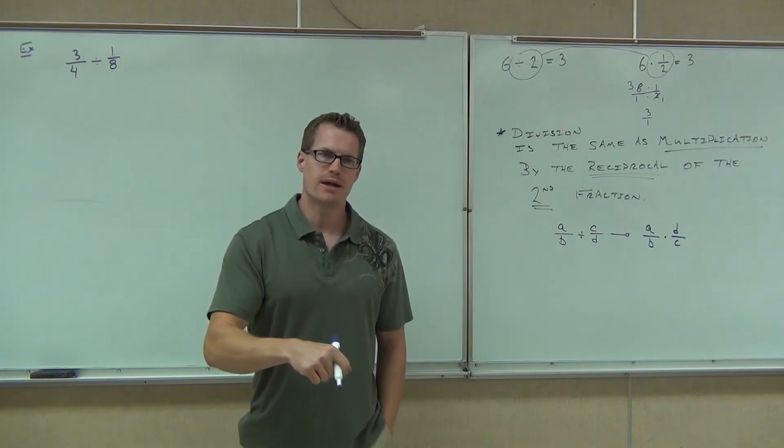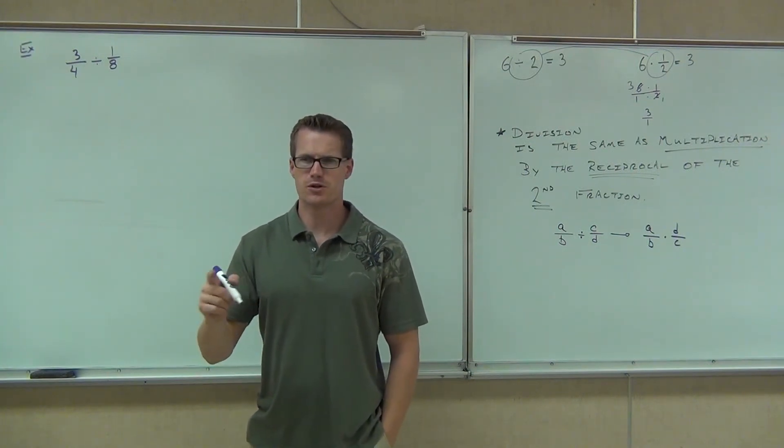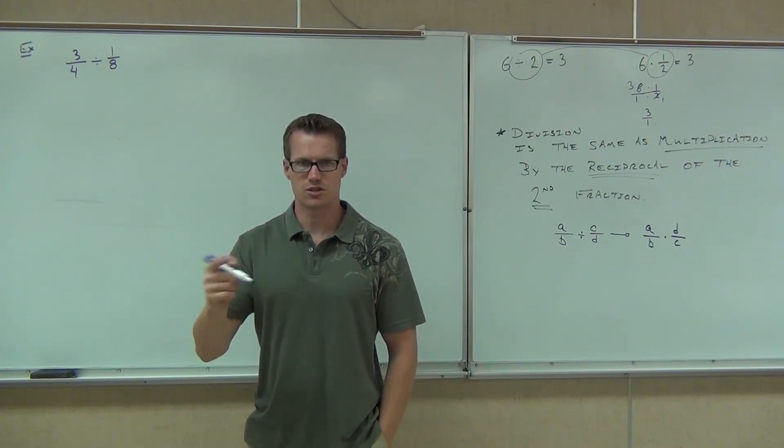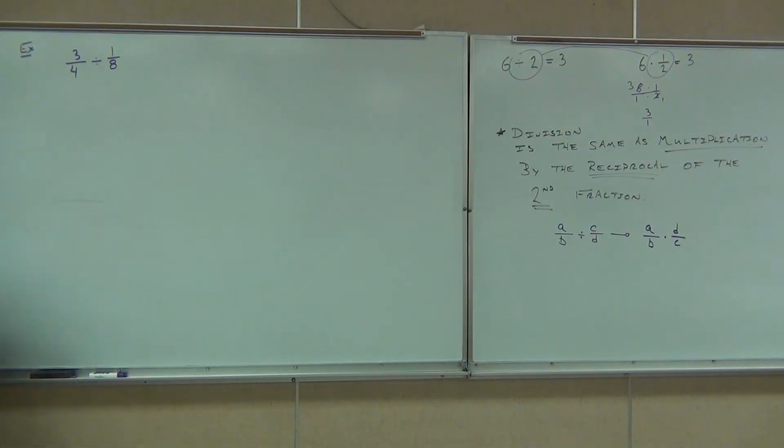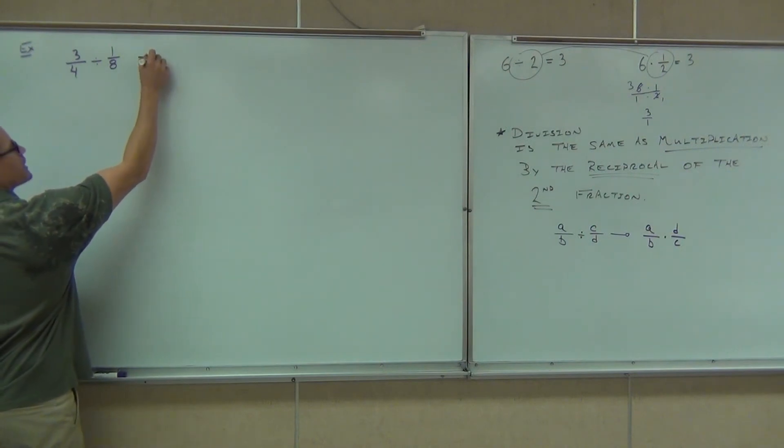But the only way we can do that is by reciprocating, which one? The first, the second, or both fractions? Second. Just the second one. So when we're doing this problem, we go, all right, we got 3 fourths divided by 1 eighth. Instead of 3 fourths divided by 1 eighth, we're going to write that as 3 fourths stays the same.